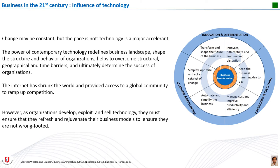Information systems are used in accounting, finance, marketing, manufacturing, and human resource management. They are found in manufacturers, wholesalers, retailers, service businesses, not-for-profit organizations, and government agencies. No matter what the function or type of business, information systems play important roles. As organizations develop, exploit, and sell technology, they must ensure they refresh and rejuvenate their business models. Information systems potentially play their most valuable role when they are integrated closely with strategy and tied to major initiatives that help achieve strategic objectives.